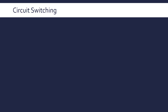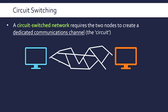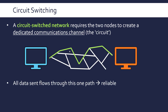Talking first about circuit switching: a circuit-switched network requires the two nodes that are going to communicate to establish a dedicated communications channel, and this channel is what is known as the 'circuit' in the name. So we've got two devices and we're choosing a single route for the data to travel through. There are lots of different possibilities to get from A to B, but one route is chosen, meaning all the data flows through only that one path from start to finish. This means it is quite reliable — you know where the data is at all points, it's not going to get lost, and it can be closely monitored.